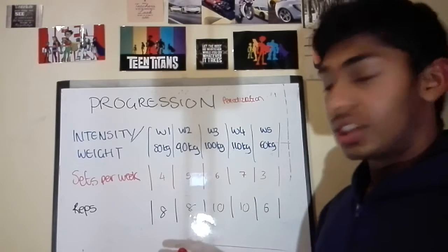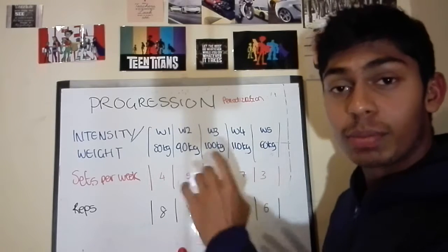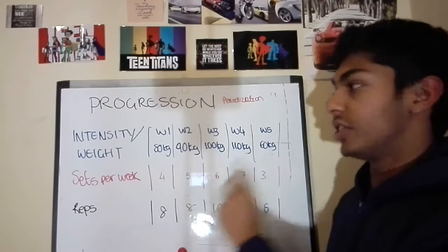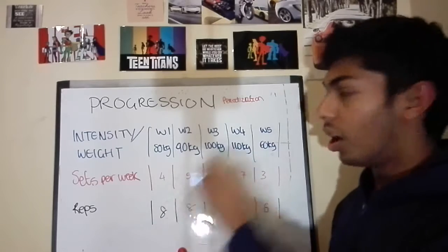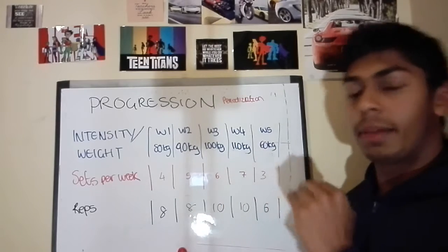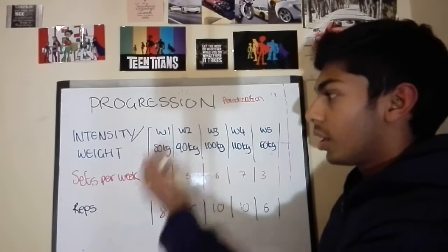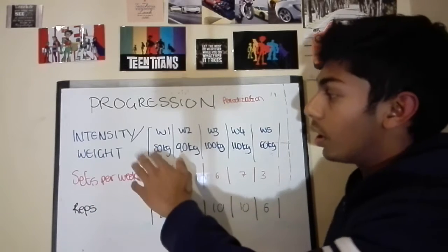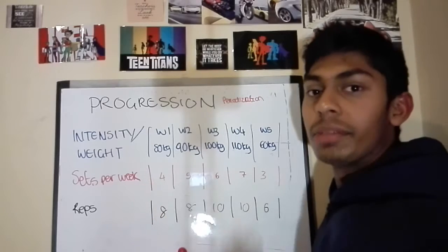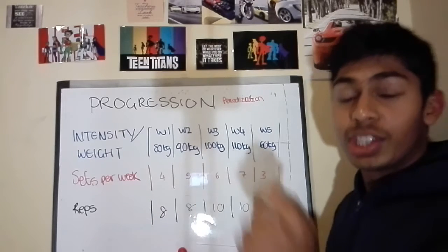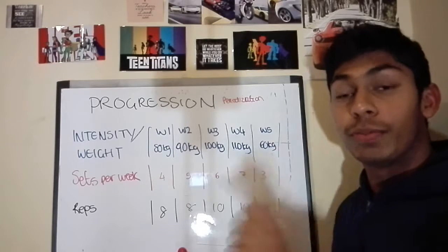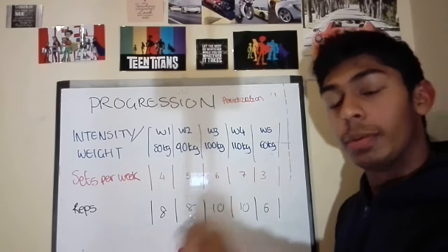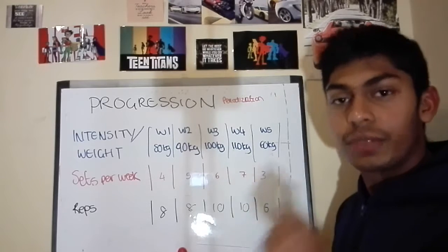Getting into progression: we're going to use the principle of bringing a harder stimulus each and every single time. With intensity — the weight on the bar — we're going to start squats on week one at maybe 80 kilograms. On the first week, you typically want to be going about two to three reps before failure. One mistake I made myself and see a lot of people making is that they are always training to failure all the time.